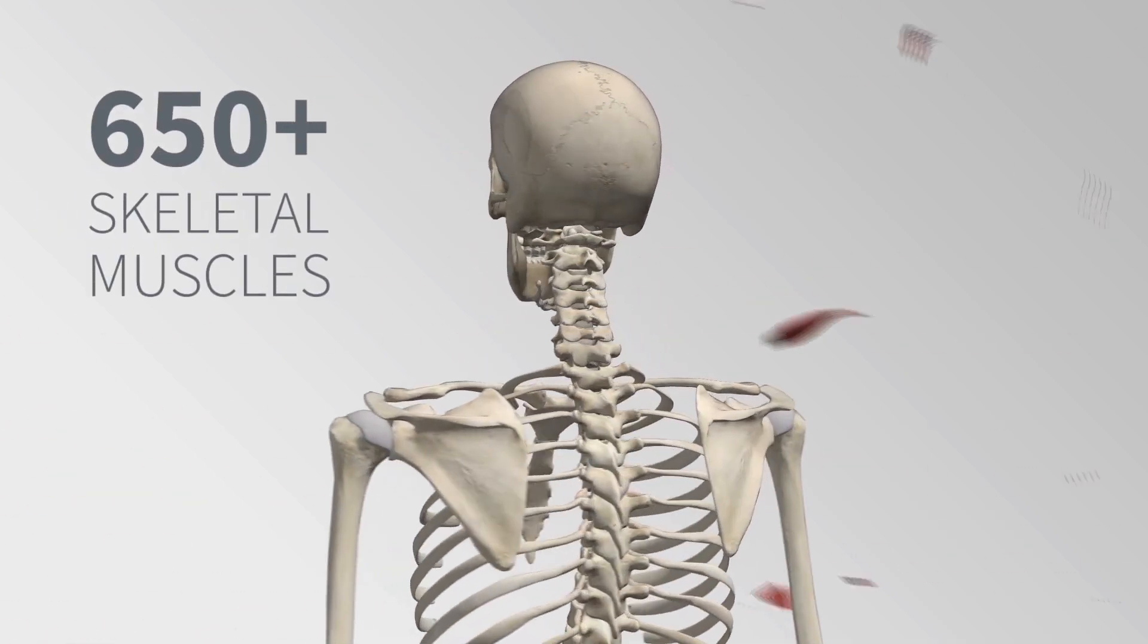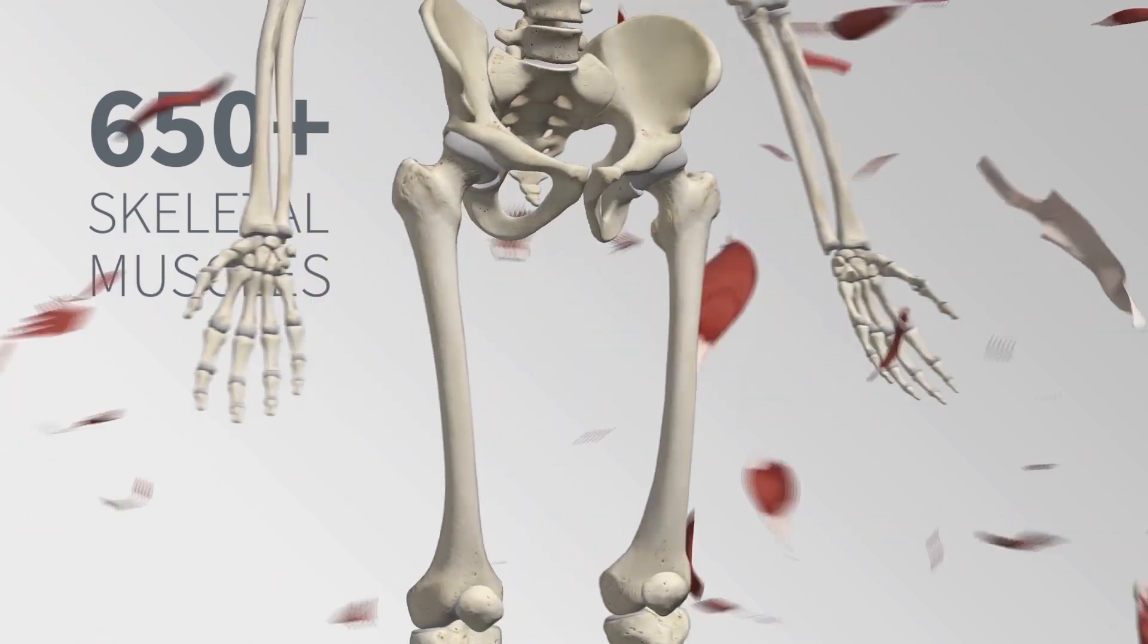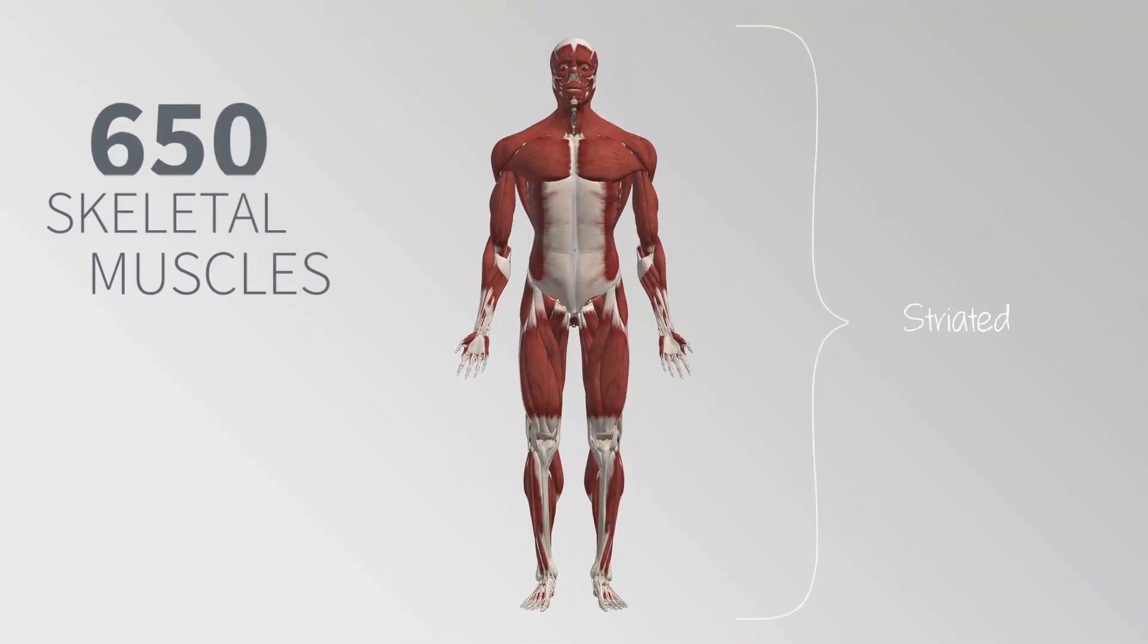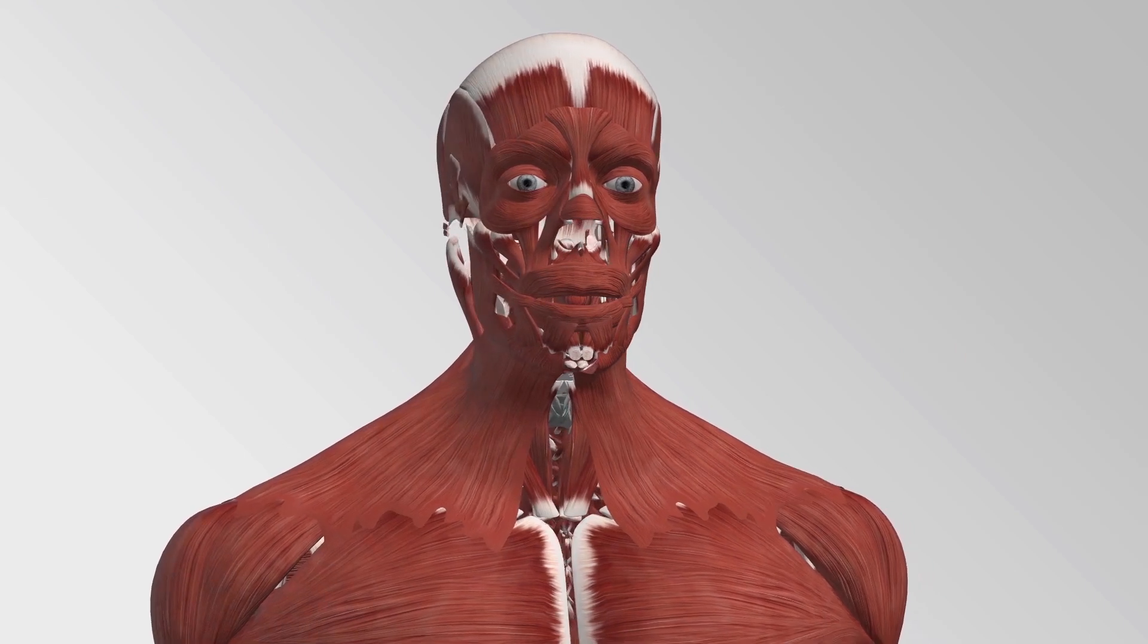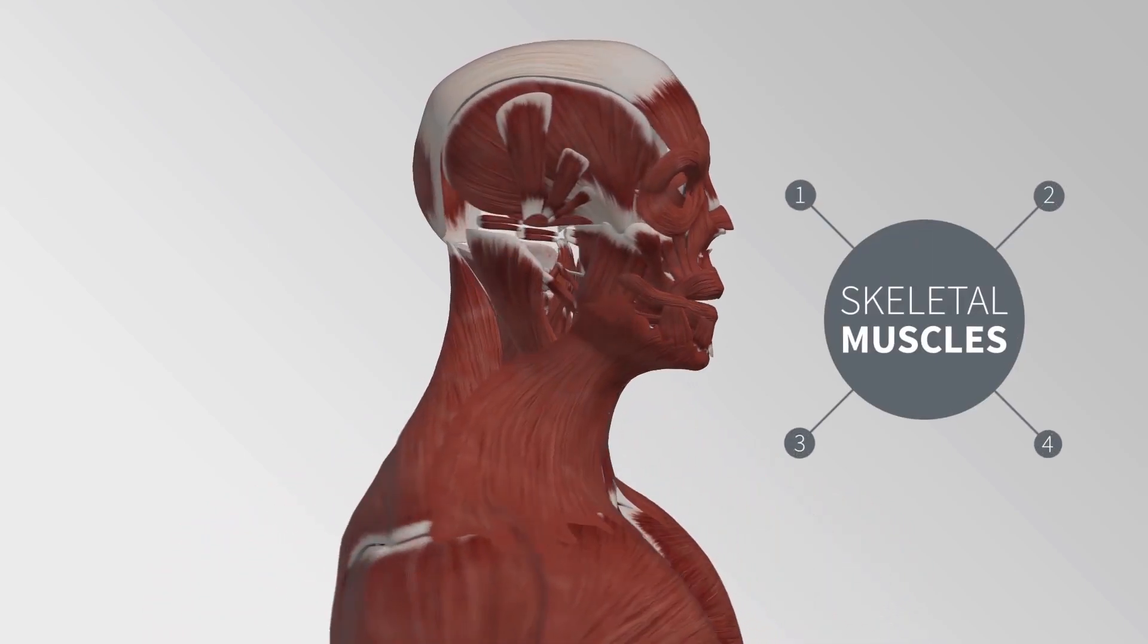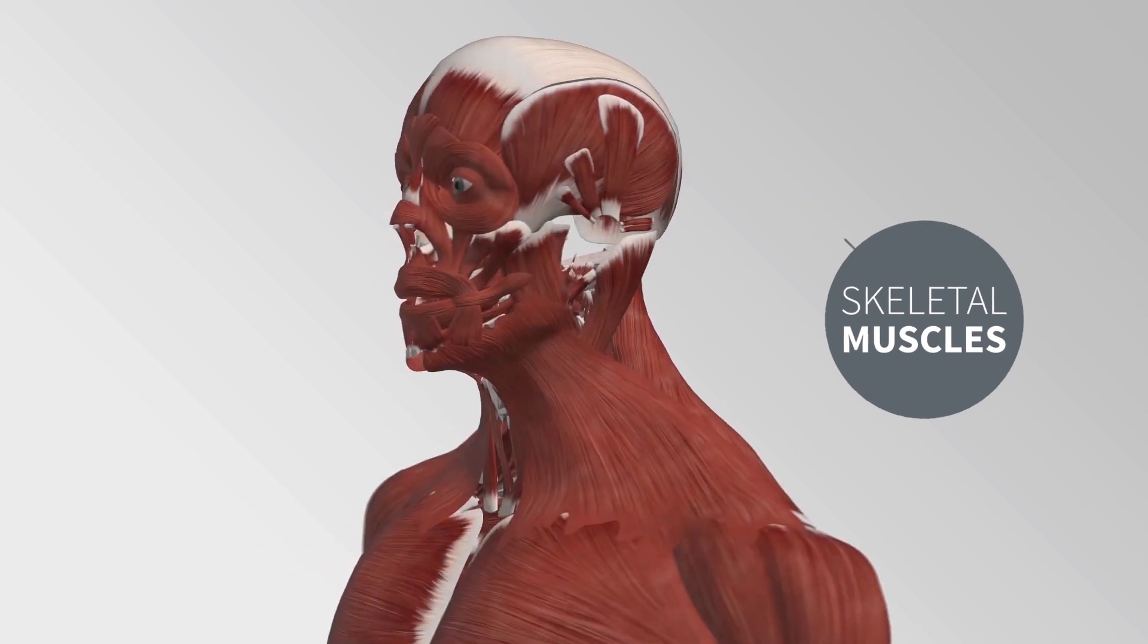Skeletal muscles are attached to and move bones. These muscles contract voluntarily and have a striated appearance. Skeletal muscles are subcategorized into four distinct groups based on the orientation and arrangement of their muscle fibers.